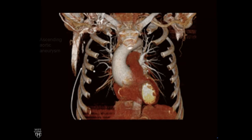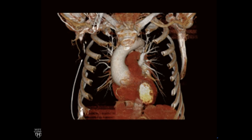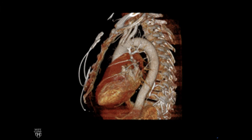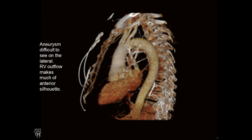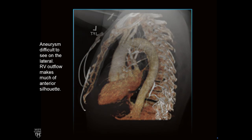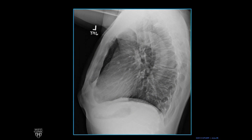Rotating back a little, there's our ascending aortic aneurysm. We rotate to the lateral, and the aneurysm is difficult to see on the lateral. The RV outflow makes much of the anterior silhouette. A lot of that is because this aneurysm especially is pooching kind of left to right, so it doesn't make a big impression front to back. When we pull up a lateral radiograph, it's not super striking.